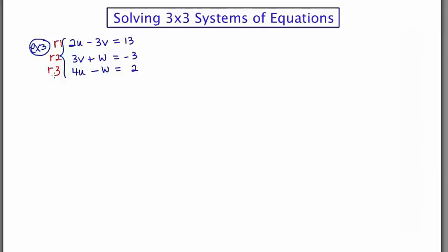Now, what I noticed first is that I've got three different variables: a u, a v, and a w. The u occurs twice, the v occurs twice, and the w occurs twice. So this one's a little bit different.